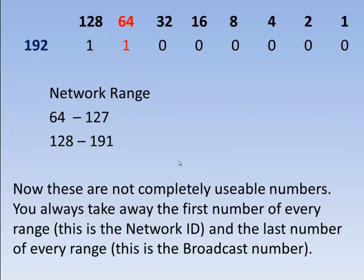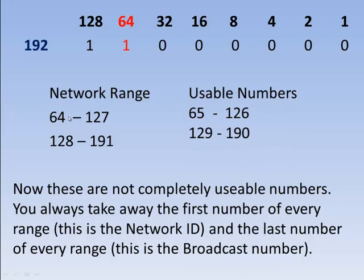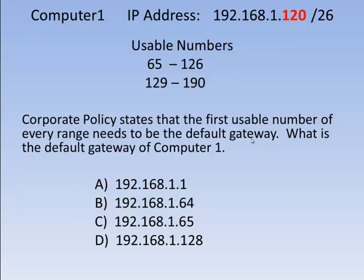Those are not all usable numbers. The first number of every range and the last number of every range have an actual job within the range. The first number represents the network ID. The last number represents the broadcast. So these aren't all usable. The usable numbers for those ranges would be 65 to 126 and 129 to 190 — those are the actual usable numbers that you can assign to hosts, including users, printers, machines, and anything that needs an IP address.